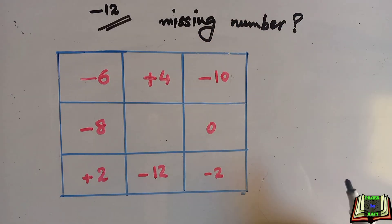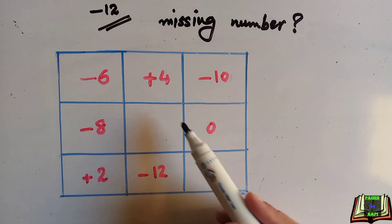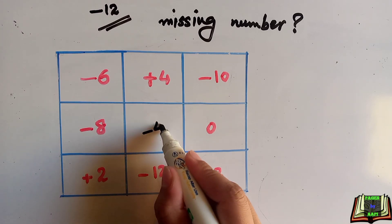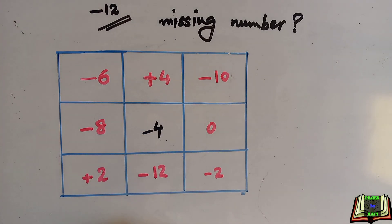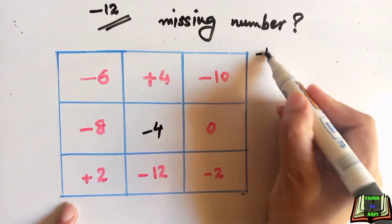We will solve one diagonal first and then cross-check the rest. In this diagonal, minus 10 and 2 are given, which makes minus 8, and we need to reach minus 12, so we add minus 4. Then we check whether the remaining rows, columns, and diagonals satisfy the magic square condition — that is, whether they all add up to minus 12.